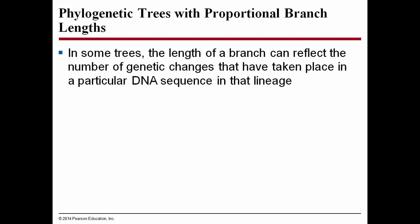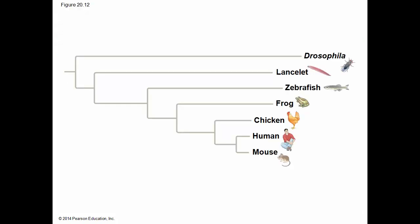In some phylogenetic trees, the length of a branch can reflect the number of genetic changes that have taken place in a particular DNA sequence in that lineage. Here we can see a very small difference between humans and mice, as indicated by the short phylogenetic branches. Whereas the outgroup, Drosophila, is an invertebrate — very distinct from the rest of these species, having evolved much earlier. Moving from Lancelet, zebrafish, frog, chicken, human, to mouse — humans and mice are both mammals, so we would expect them to be more closely related, and according to the length of these phylogenetic branches, we can tell that they are.